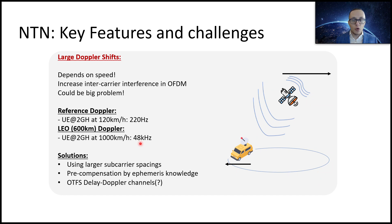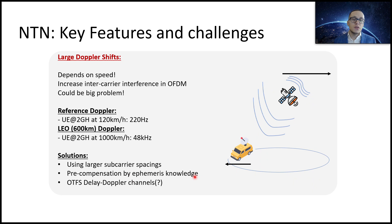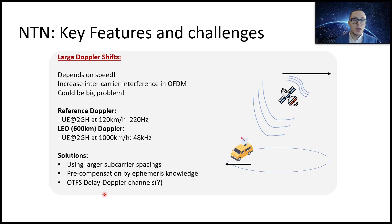This could be a huge problem because it increases inter-carrier or inter-symbol interference, which is not such a big issue for terrestrial networks. 3GPP is working to fix this problem. One possible solution is to use large subcarrier spacing, though this may not be suitable for every case. Another solution is pre-compensation using ephemeris knowledge — a set of parameters describing the movement of an NTN node over time — or OTFS delay-Doppler channels, a technology more relevant to 6G networks, especially for hypersonic objects.